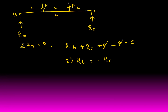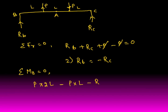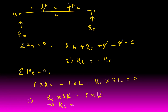Taking moment about B equal to zero for equilibrium: P×2L (clockwise, positive) minus P×L minus RC×3L = 0. So RC×3L = P×L, which gives RC = P/3. Therefore RB = −P/3.